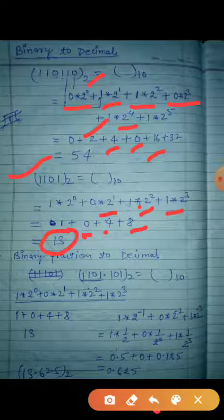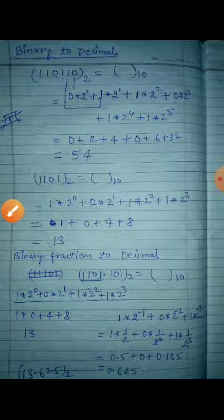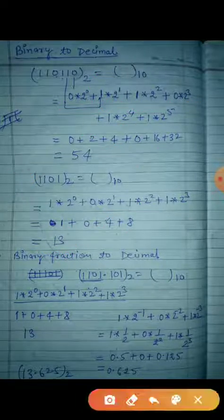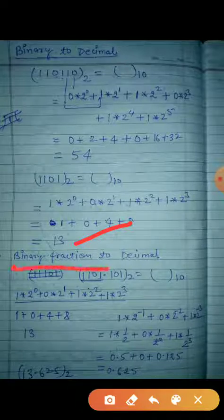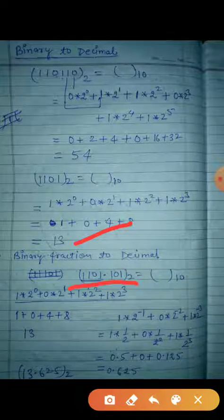In this way, through this method, you can convert binary to decimal. Now the next question is: how will you convert a binary fraction? Binary fraction means a number in this form — like 1101.101. This is a binary fraction because there is a point value here.